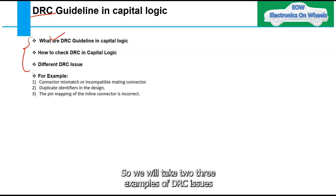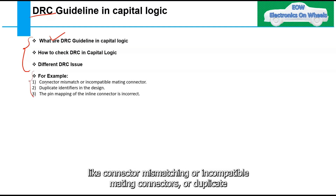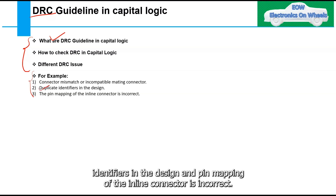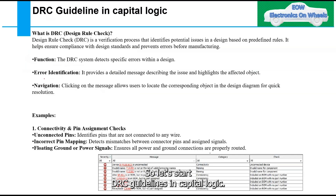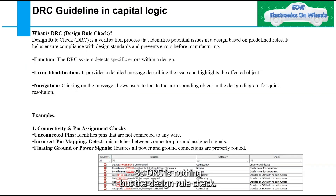We will take two or three examples of DRC issues — like incompatible mating connectors, duplicate identifiers in the design, and incorrect pin mapping of the inline connector. Let's start with DRC guidelines in Capital Logic.